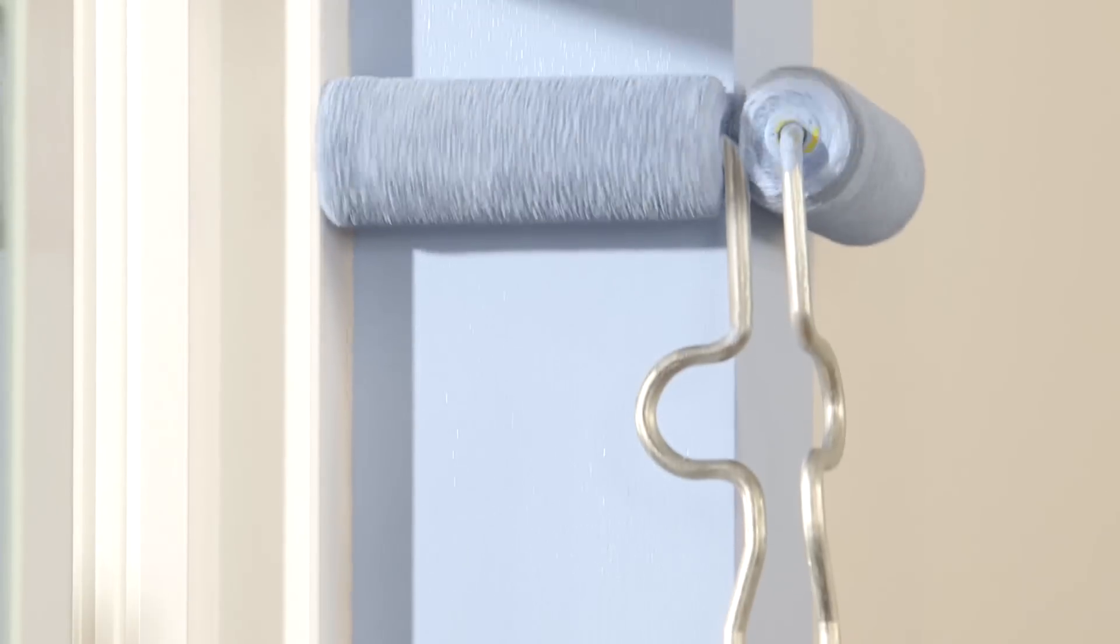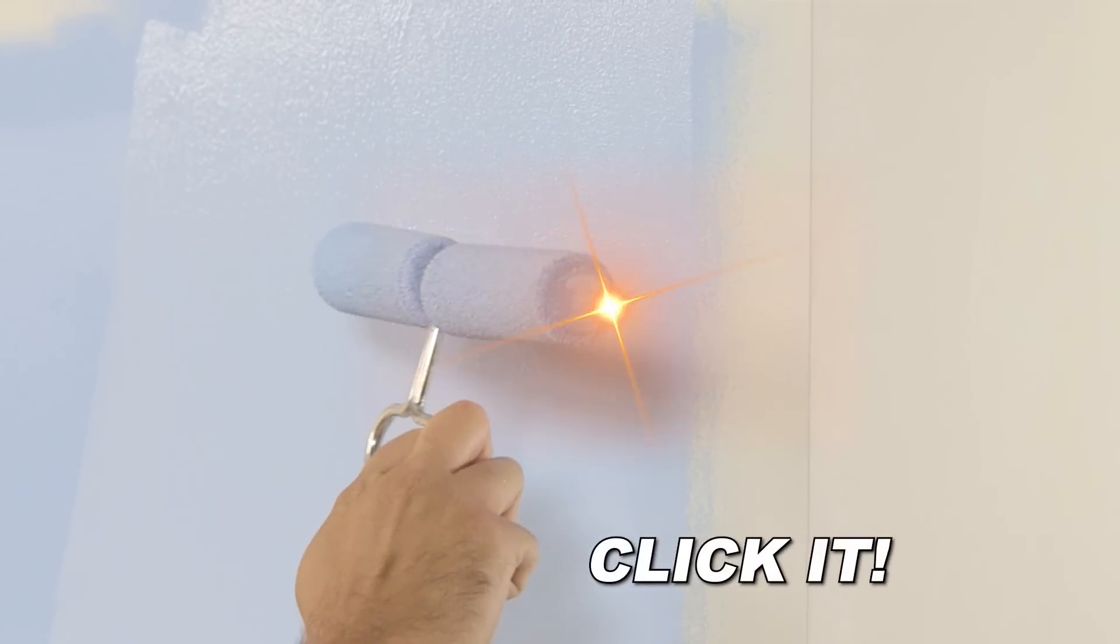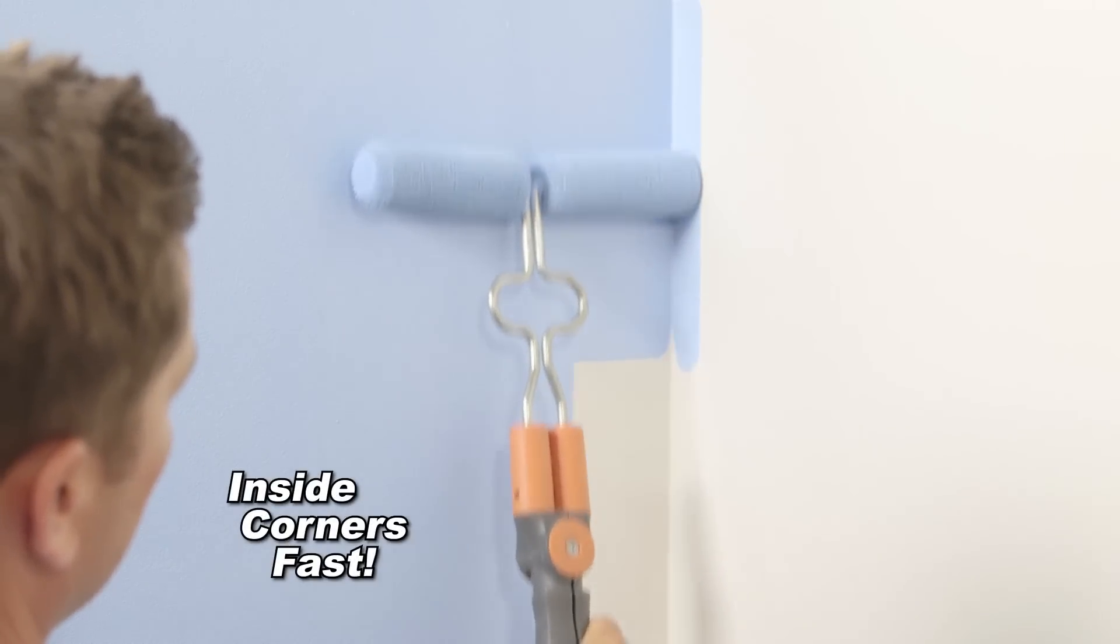Now turn it! You can paint an outside corner, two walls, and edging at the same time. Then simply click it. With the inside roller, you can paint an inside corner.